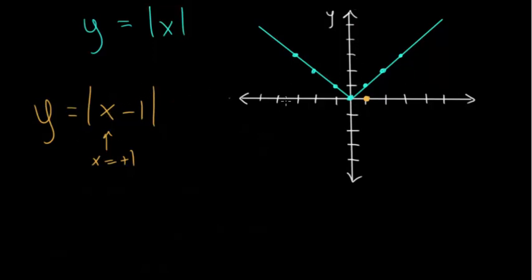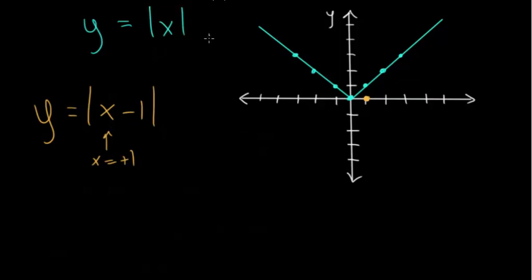When we add or subtract on the inside, it shifts left or right. But what you'll notice is that when dealing with the inside of a function, it shifts in the direction you wouldn't expect: when you subtract, it actually moves to the right, and when you add, it moves to the left. The key idea is to think about which x value makes the expression inside equal to zero. In this case, it's positive one, so we go one unit in the positive direction.